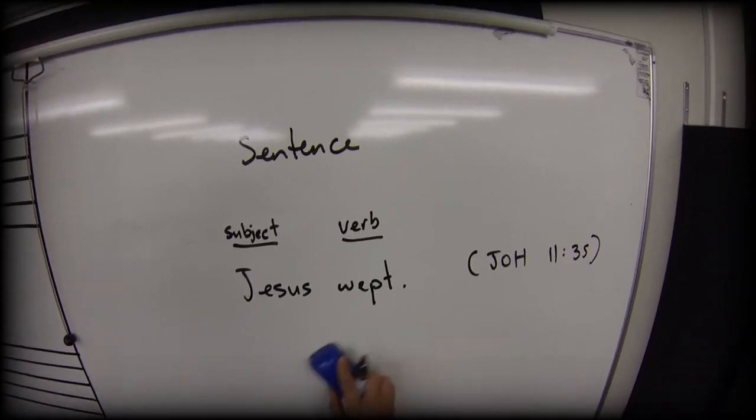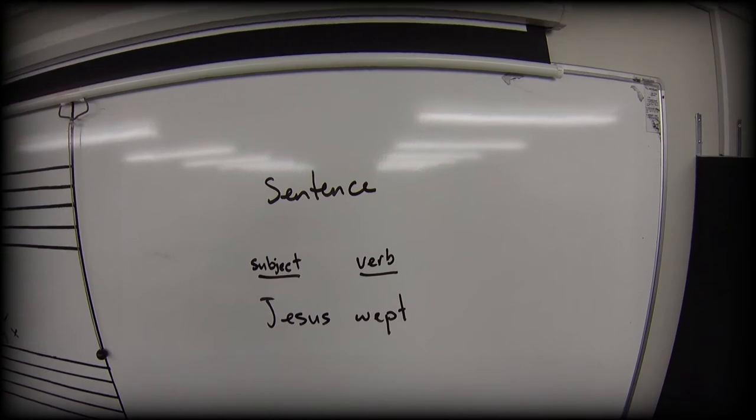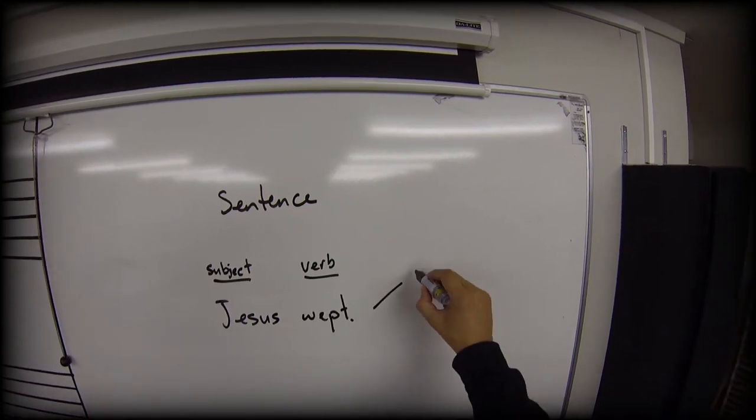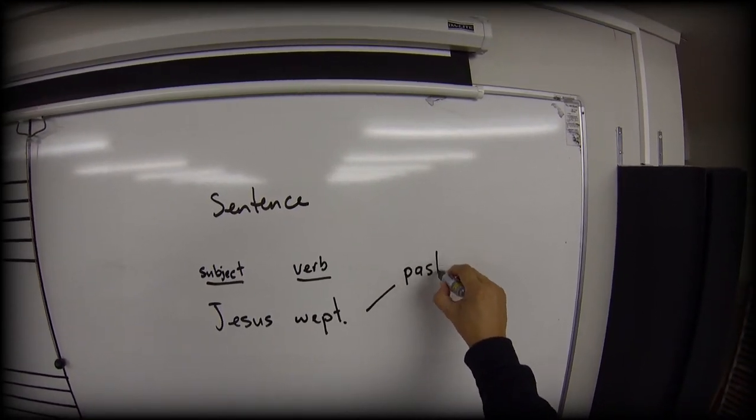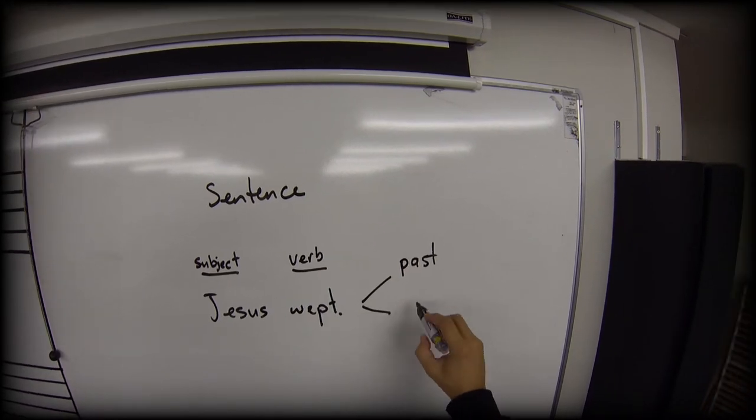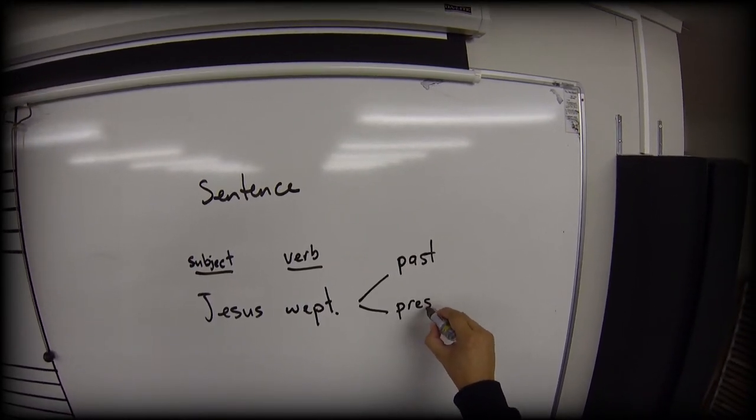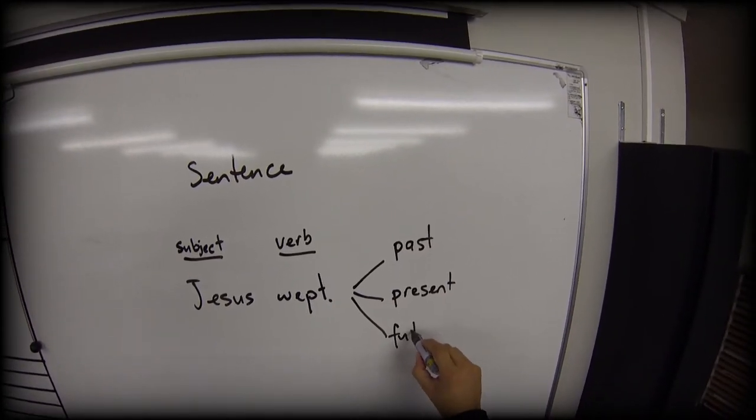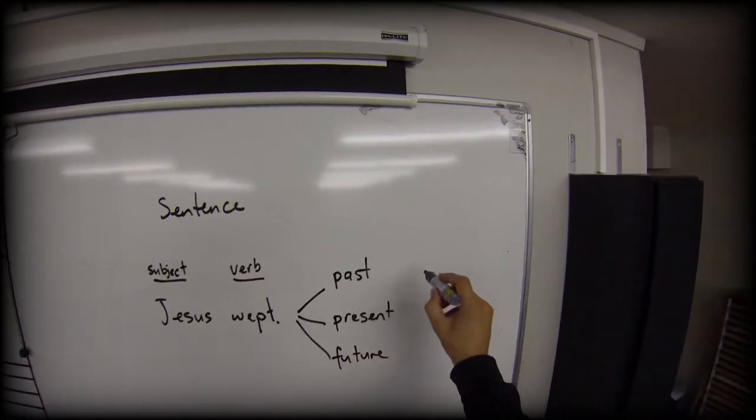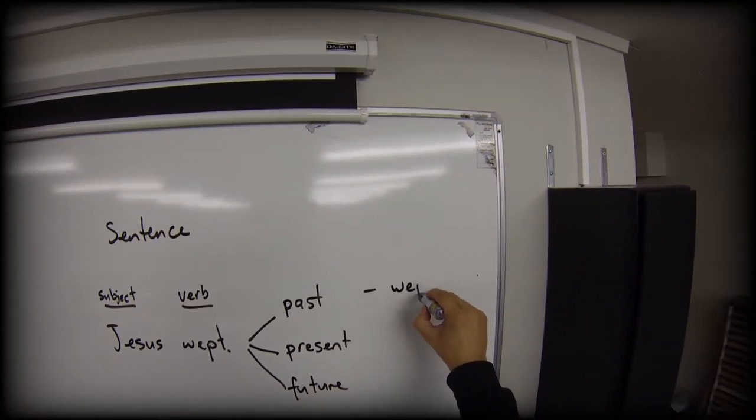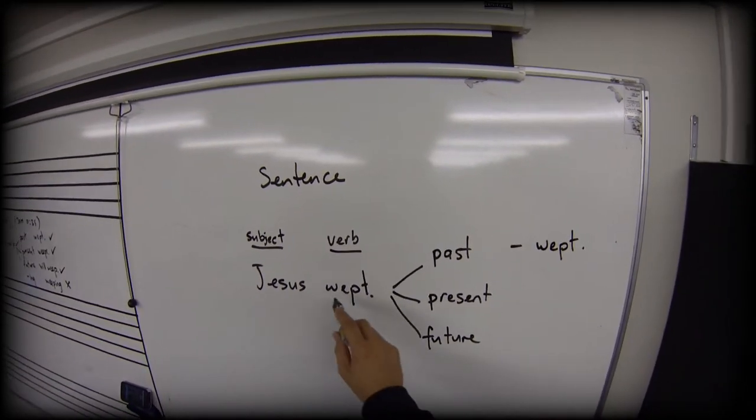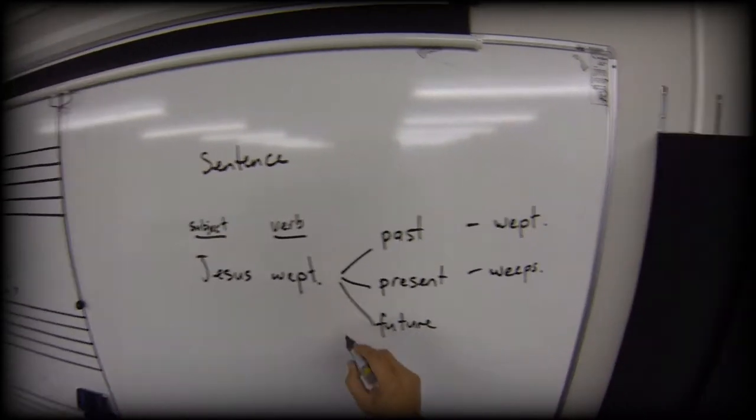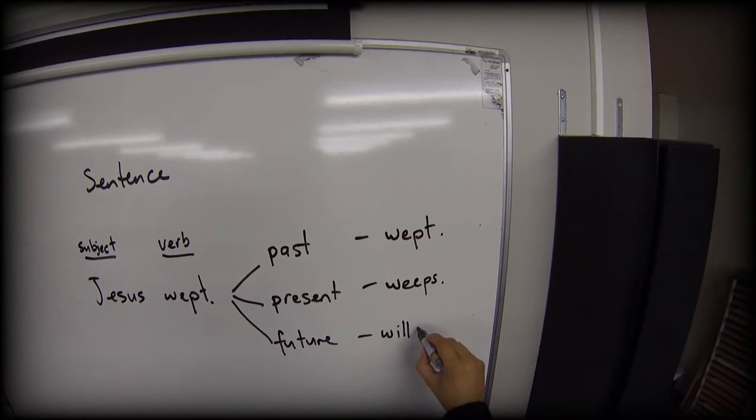So let's look at this verb 'wept.' To qualify as a full sentence, this verb has got to be either in the past, or it's something that is happening now in the present, or it's something that will happen in the future. So Jesus wept is a complete sentence. Jesus weeps is a complete sentence. And even Jesus will weep.